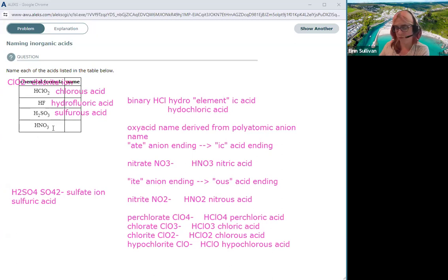And then HNO3 would be nitric acid. All right, so just keep practicing those. That's pretty much, if you learn your polyatomic ions, you'll be really close. Just remember ic goes to ate and ous goes to ite, or vice versa.